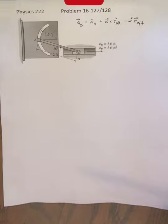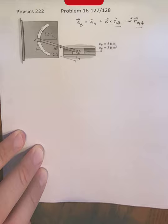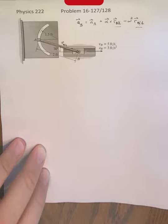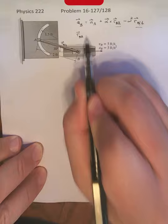So the quantity rB/A, that's going to be the vector that stretches from A to B. So pointing along that way, that's going to be rB/A. And notice we know its angle and we know its length. And so that's the first vector we're going to write down, rB/A.